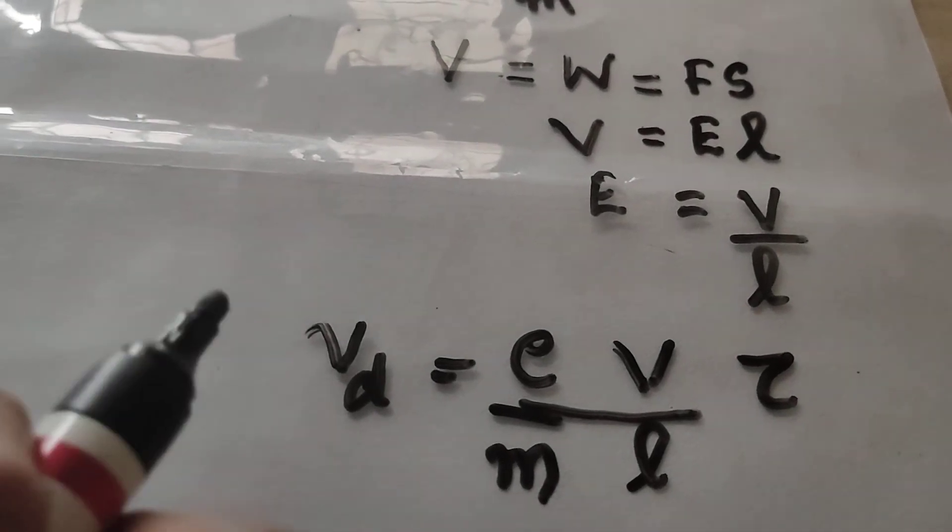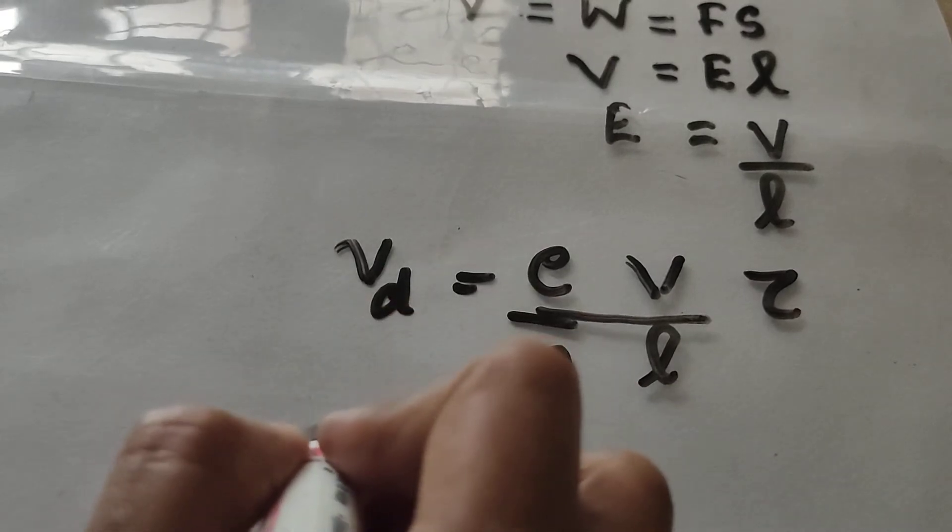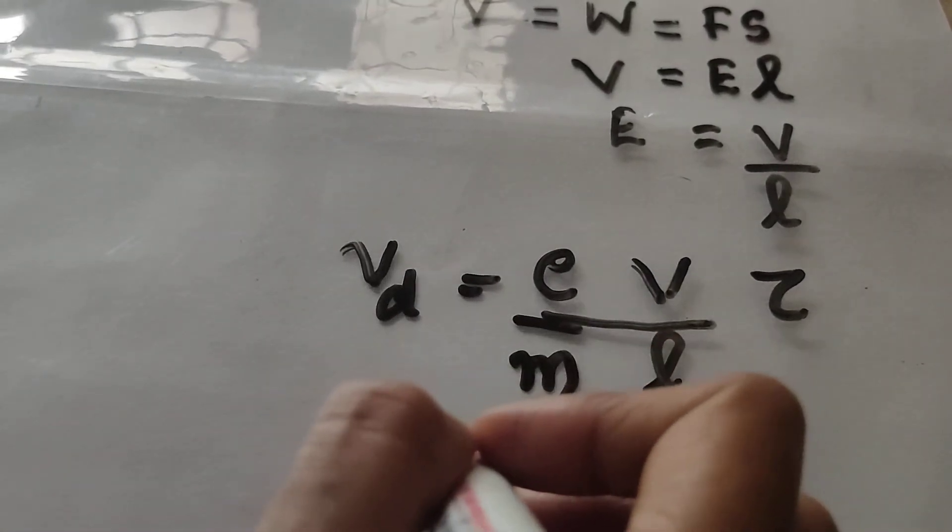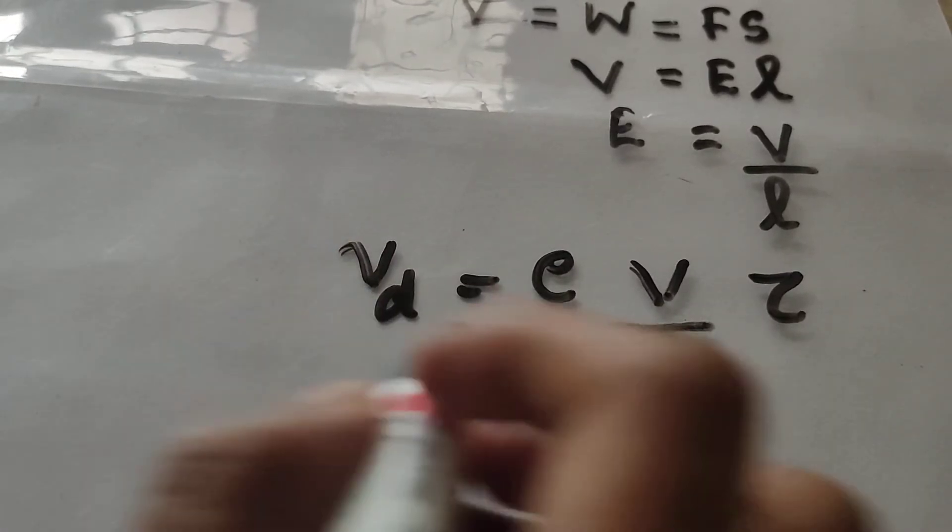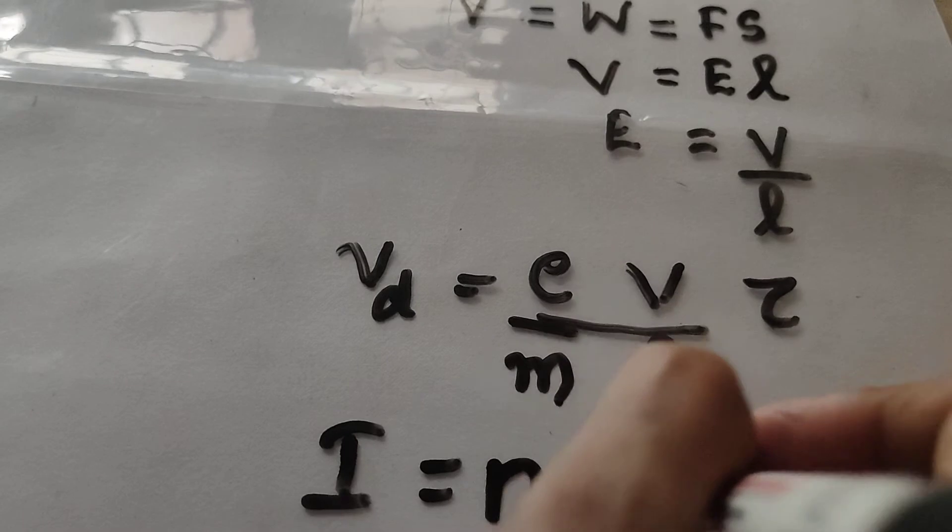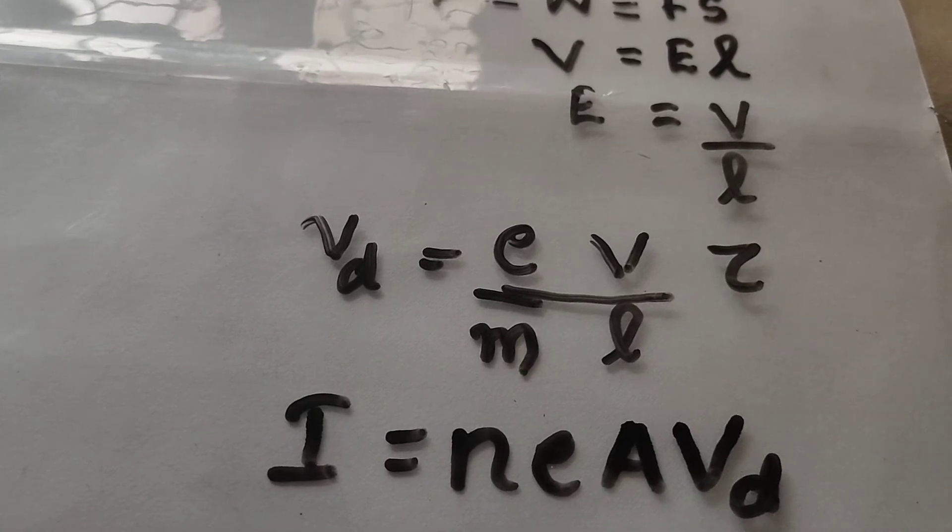Then, we have studied an equation for electric current. Electric current I is equal to, what is electric current I? I is equal to N, e, A, Vd. Last class, we have derived this equation. Electric current I is equal to NeAVd.